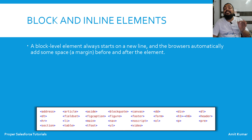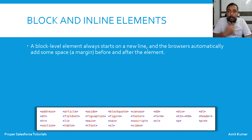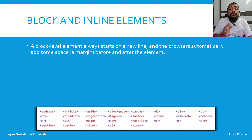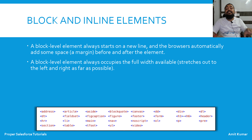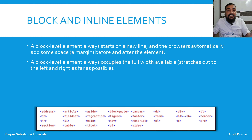A block level element always starts on a new line and the browser automatically adds some space or margin before and after the element. So whenever you are using a block level element there is always going to be some margin before and afterwards, and all block level elements will start on a new line. A block level element always occupies the full width available and stretches out to the left and right as far as possible, taking the full width of the screen available to it.